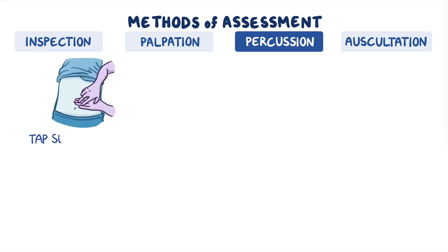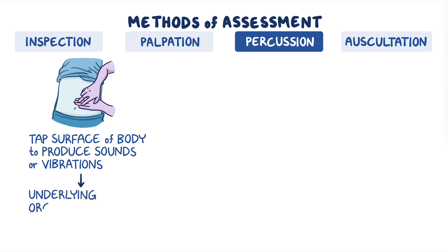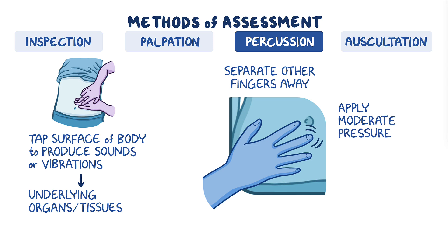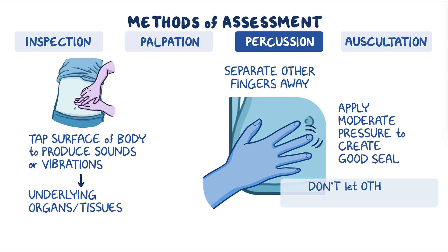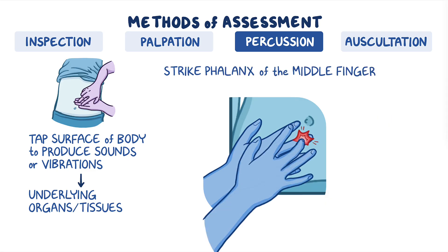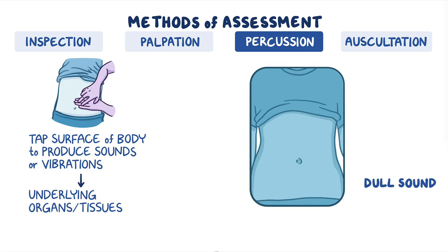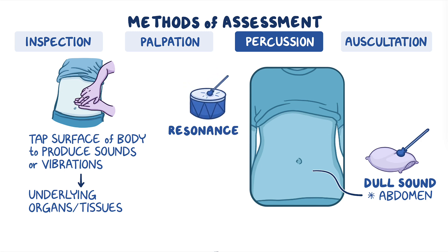Then there's percussion, which is when you tap the surface of the body in order to produce sounds or vibrations to reveal information about the underlying organs or tissues. To percuss, place the middle finger of one hand on the area you wish to percuss and separate the other fingers away from it. Then apply moderate pressure with the middle finger to create a good seal — don't let the other fingers rest on your client's body. Next, strike the phalanx of the middle finger with the tip of the middle finger of your other hand using a quick, sharp, relaxed wrist motion. Be sure to keep the striking finger flexed. If you hear a dull sound while percussing over the abdomen, you are likely tapping over a solid organ like the liver. Likewise, you should expect to hear resonance when percussing over the lungs.